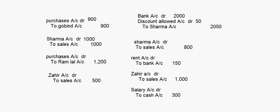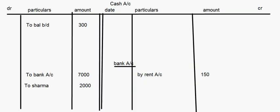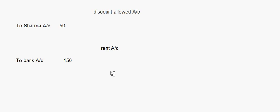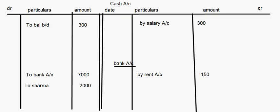Finally: salary account to cash account. In cash account write 'By salary account Rs. 300'. In salary account write 'To cash account Rs. 300'. We have now posted all the entries into the ledger and prepared all the ledger accounts.